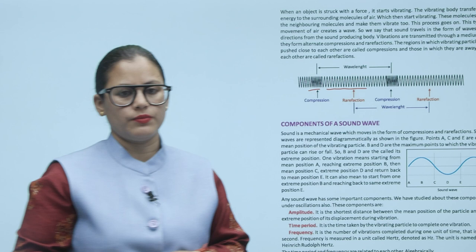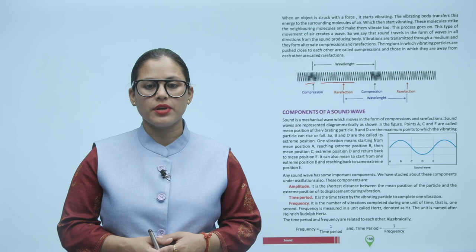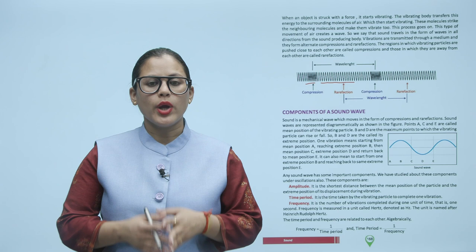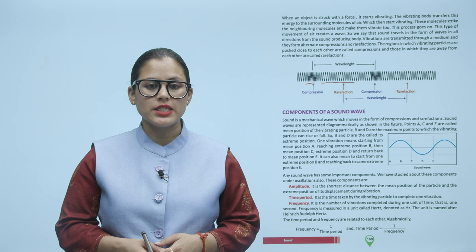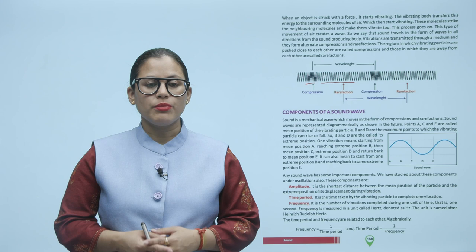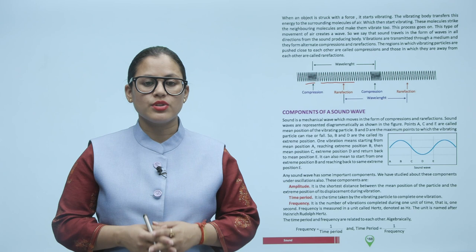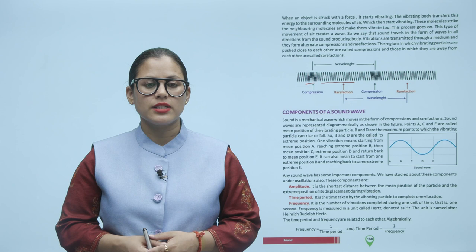Components of a sound wave. Sound is a mechanical wave which moves in the form of compressions and rarefactions. Sound waves are represented diagrammatically. Points A, C, and E are called the mean position of the vibrating particle. B and D are the maximum points to which the vibrating particle can rise or fall — they are called the extreme position. One vibration means starting from mean position A, reaching extreme position B, then mean position C, extreme position D, and returning to mean position E. It can also mean starting from one extreme position and reaching back to the same extreme position.